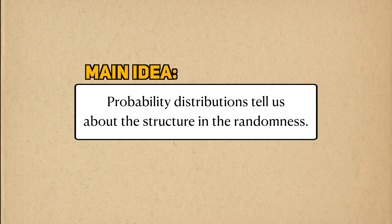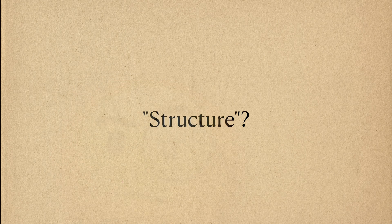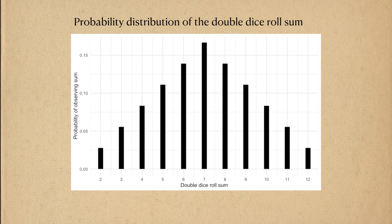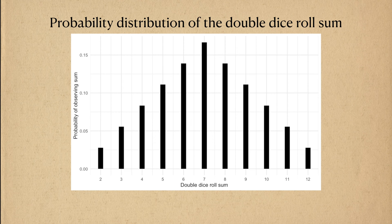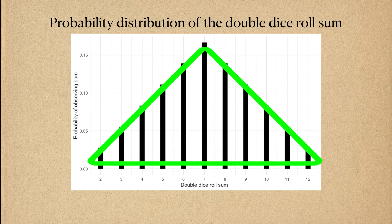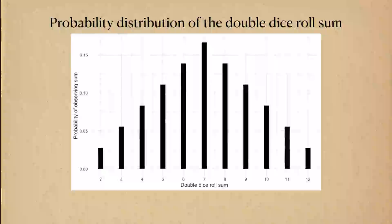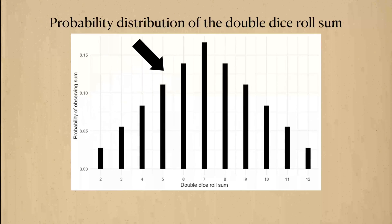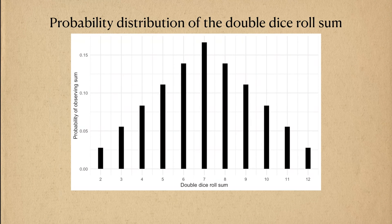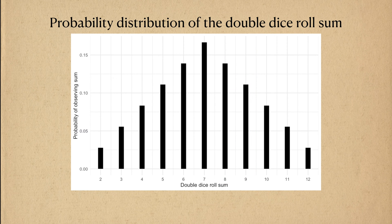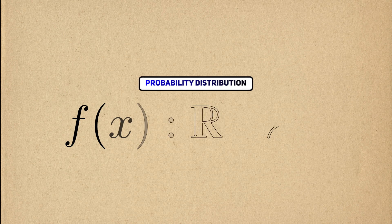The probability distribution is important because it describes the structure in the randomness of a random variable. Let's look at the probability distribution of the sum of the double dice roll. The distribution takes on a triangle shape. When many people think of randomness, they think of chaos — totally unpredictable. But by looking at the entire function, you can see which values are likely and which aren't. If you want to win in Catan, choose hexagons with an 8 or a 9. If you want to have a bad time, choose 2 or 12.